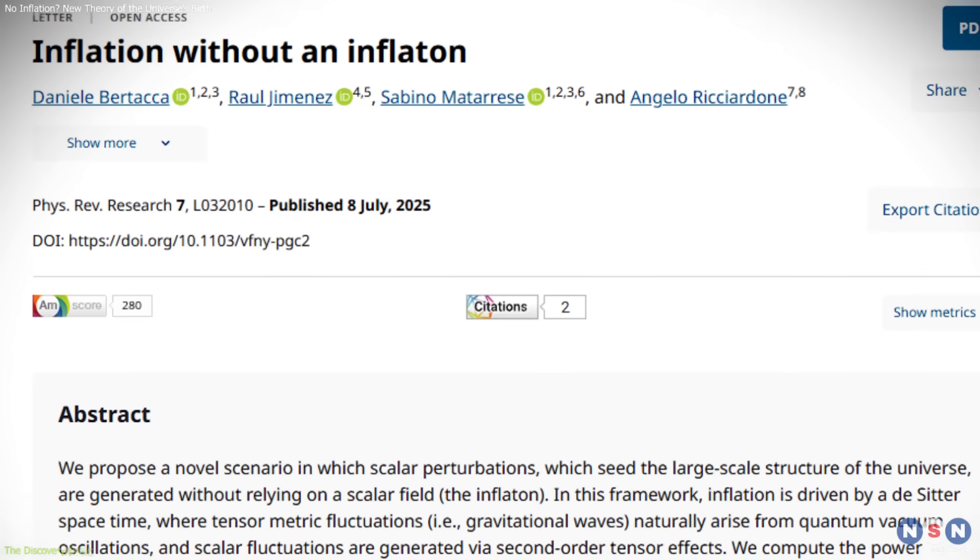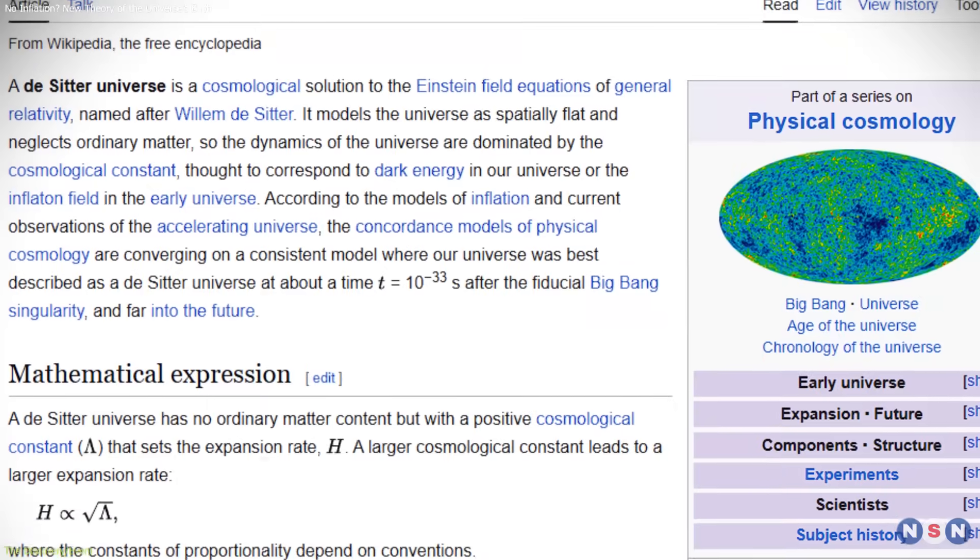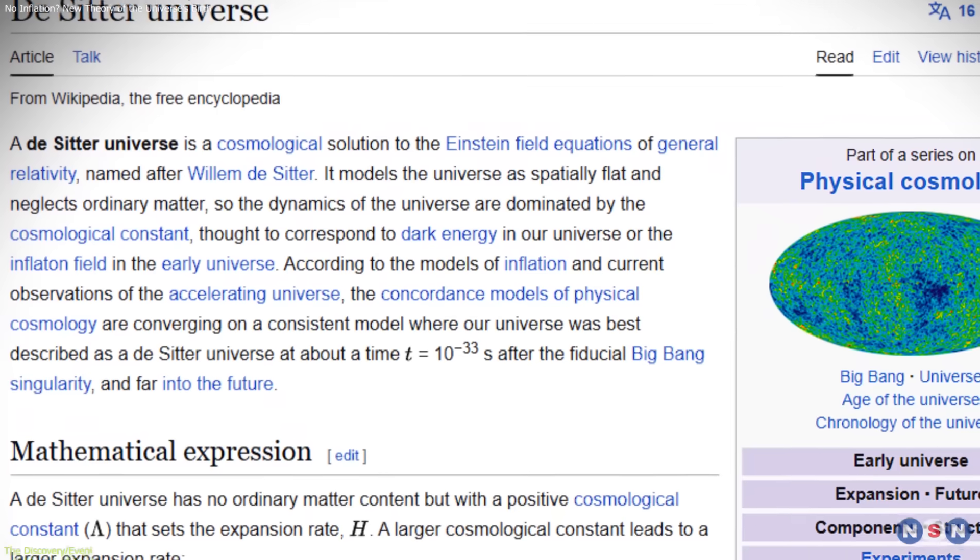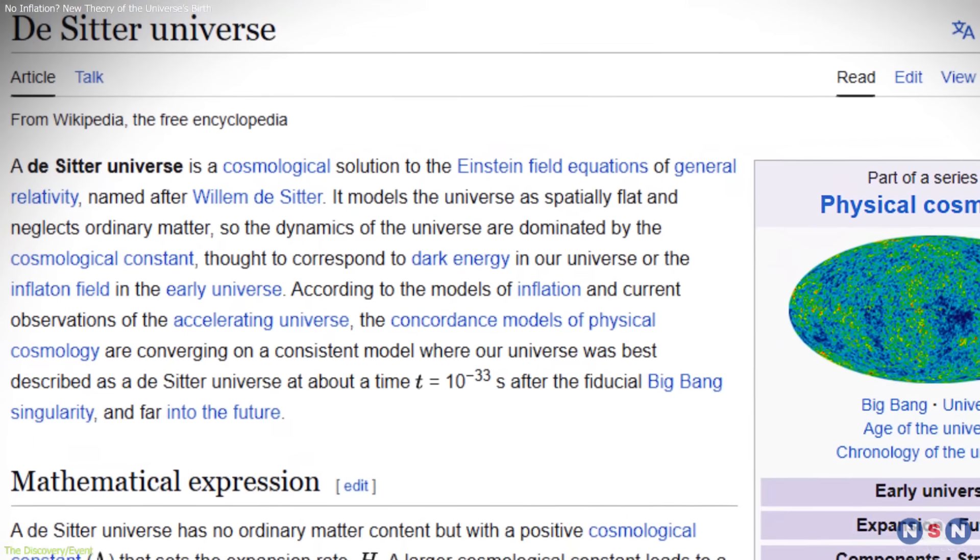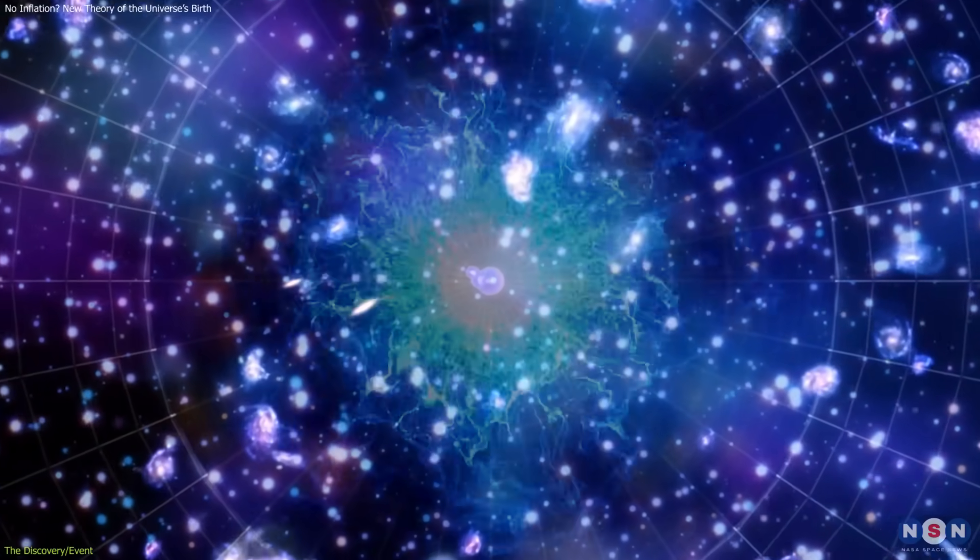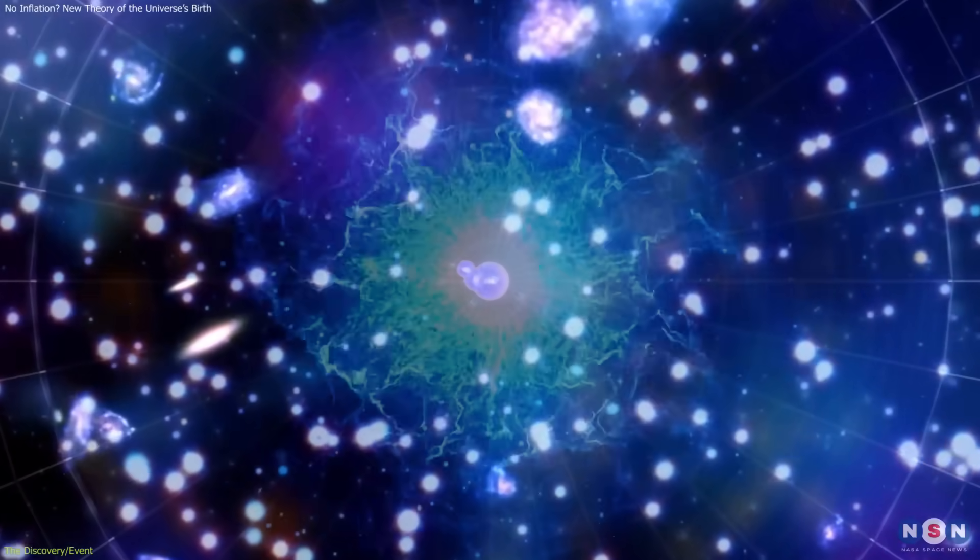The new model looks inward rather than outward. It starts with de Sitter space, a solution to Einstein's equations of general relativity first explored in the 1920s. De Sitter space describes a universe dominated by constant energy density, a useful approximation for the early cosmos.